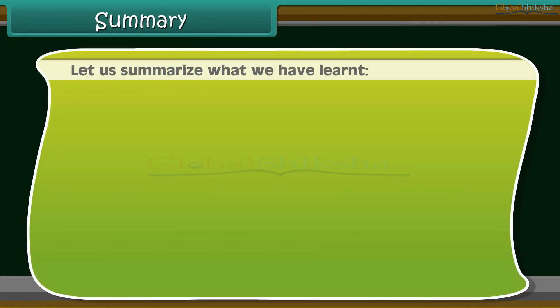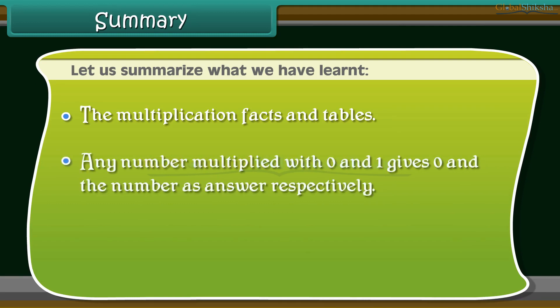Summary: Let us summarize what we have learned. The multiplication facts and tables. Any number multiplied with 0 and 1 gives 0 and the number as answer respectively.